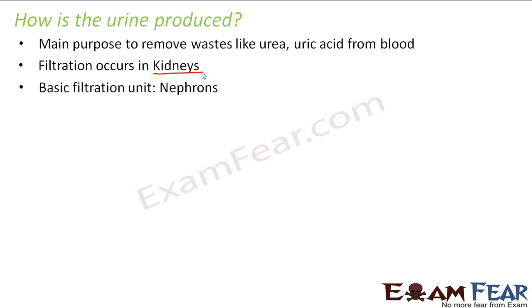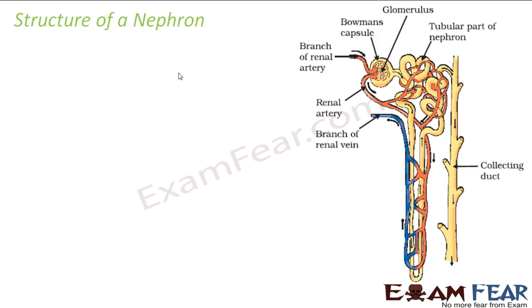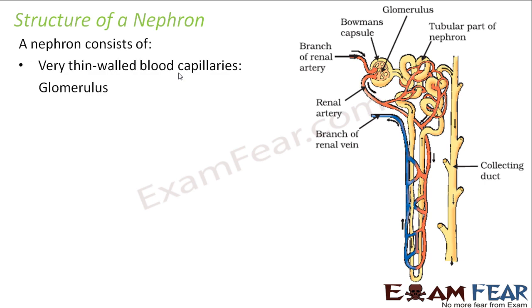The kidney is made up of a large number of nephron units. If we understand the structure and function of each nephron, we can understand the function of the kidney. Each kidney has many nephrons packed together. A nephron consists of very thin-walled blood capillaries known as the glomerulus, which you can see here inside this structure.